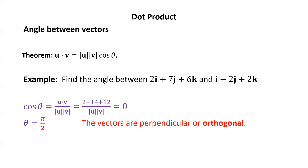Since θ = π/2, or 90 degrees, the vectors are perpendicular. In this case we also say the vectors are orthogonal. For vectors in two-space and three-space, perpendicular and orthogonal are equivalent. However, they differ in general: perpendicular is a geometric definition meaning two things intersect at right angles, while orthogonal is an algebraic definition meaning the dot product is zero — and orthogonal applies to more general settings.